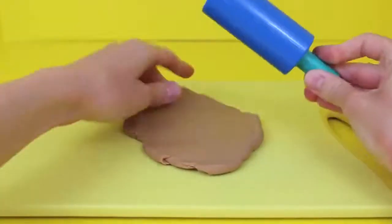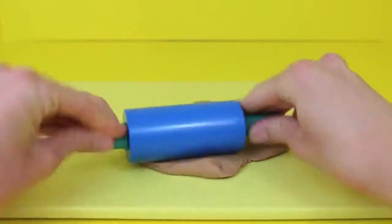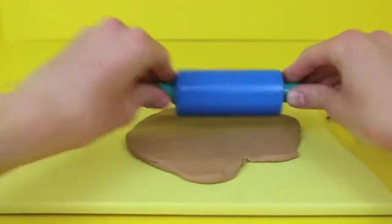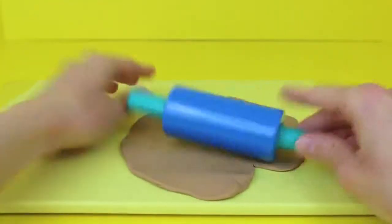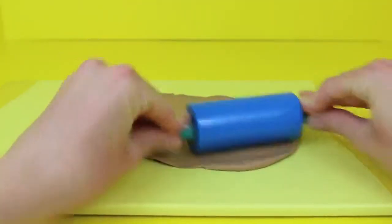Next I'm going to roll out some of this brown Play-Doh to act as the breading on the corn dog. Real corn dogs are breaded in a corn meal batter and then fried but since this is just Play-Doh I'm going to just roll out this brown Play-Doh.